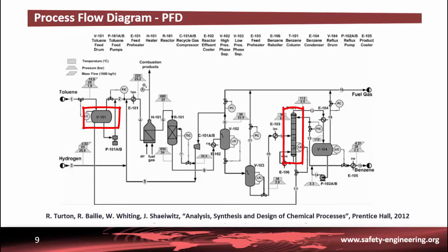Equipment is represented symbolically by icons that identify specific unit operations. Although the American Society of Mechanical Engineers publishes a set of symbols to use in preparing flow sheets, it is not uncommon for companies to use in-house symbols. Whichever set of symbols is used, there is seldom a problem in identifying the operation represented by each icon. When referring to this kind of process diagram, you can see that each of the process streams is identified by a number in a diamond box located on the stream.